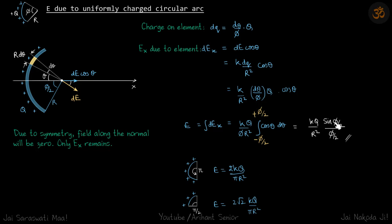then the angle φ becomes π/2. Then your electric field is 2√2 kq/(πr²). So these are all the cases of a uniformly charged circular arc field at the center.